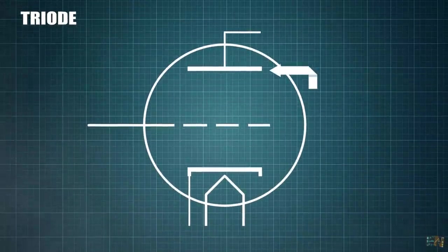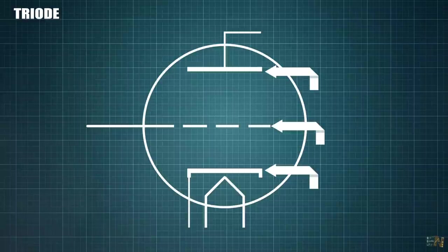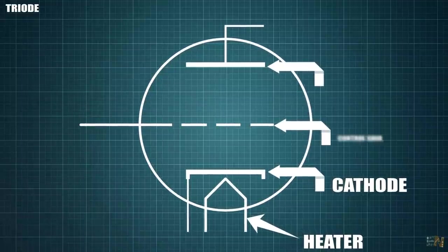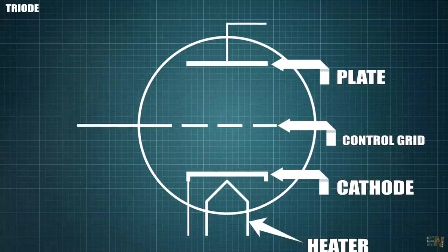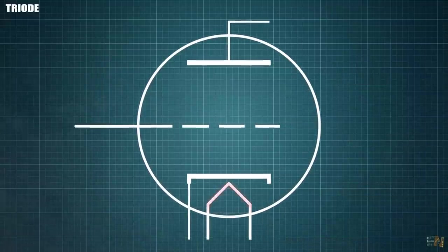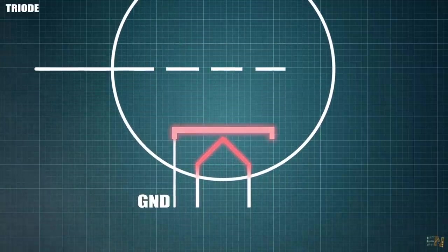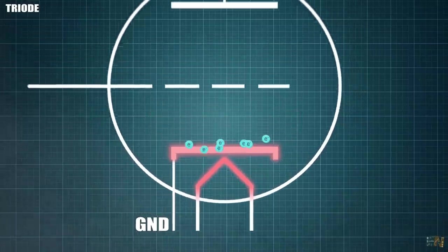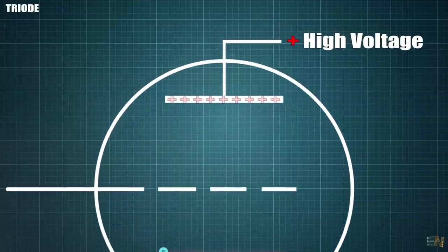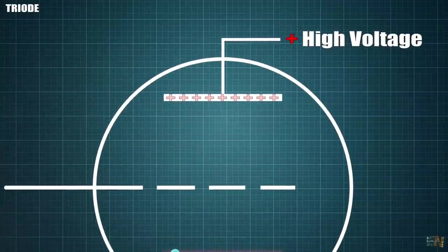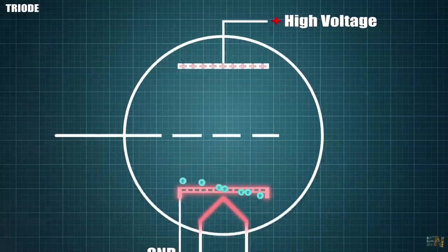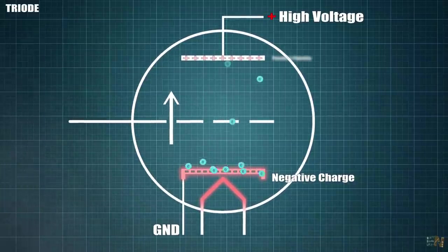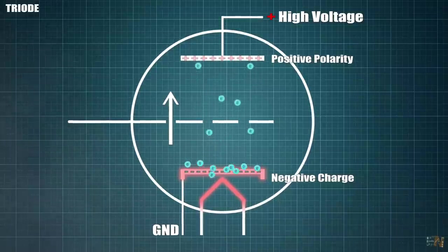A triode is called triode because inside of the vacuum tube we have 3 elements. We don't count the heating filament as an element. So we have the cathode, a control grid and then we have a plate. When we heat the filament, that will heat the cathode which is usually connected to ground. When this metal is heating up, it will start bouncing electrons around it. At the same time, we connect a positive voltage to the plate. Usually this is a high voltage of more than 50V. Since the electrons on the cathode have negative polarity, this will be attracted by the positive polarity on the plate, so they will start flowing in that direction, creating a current.